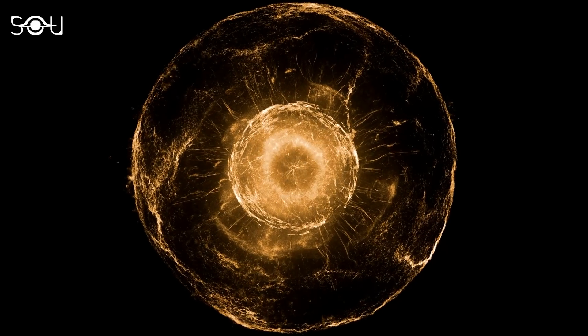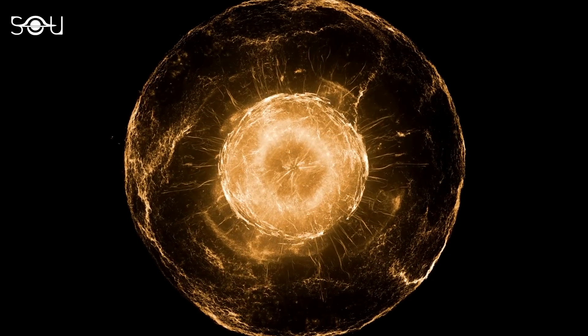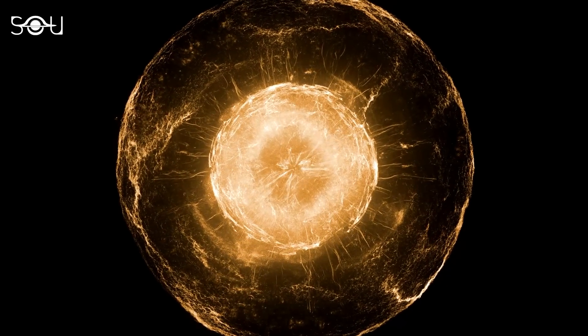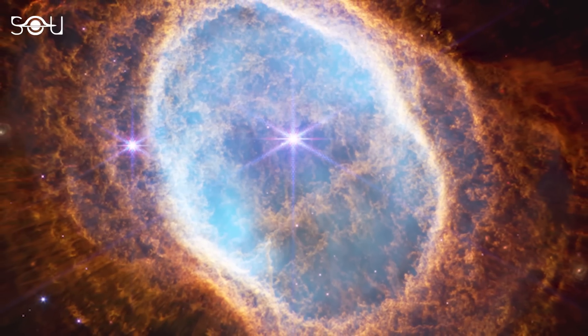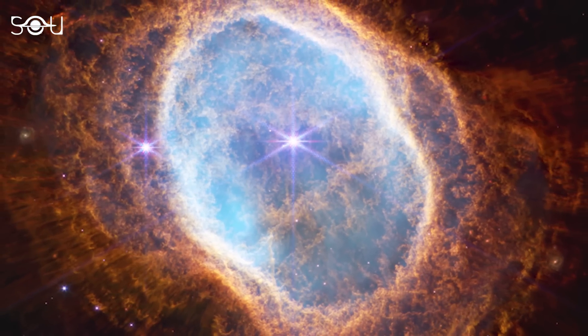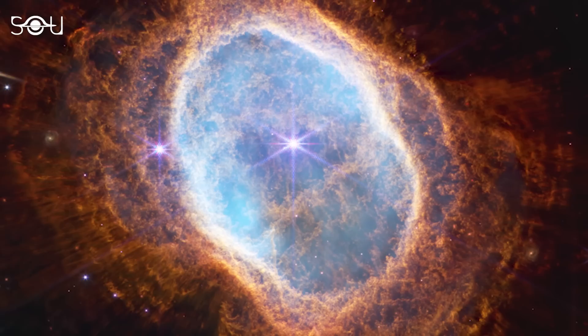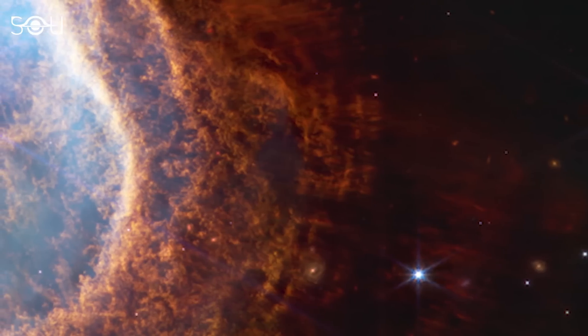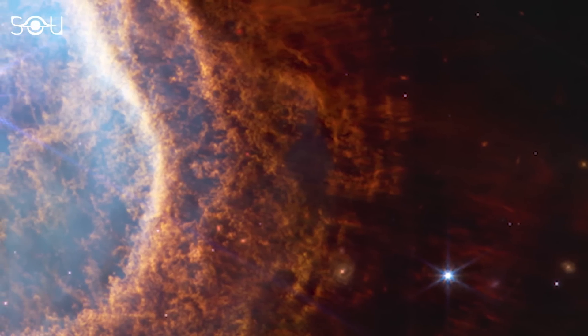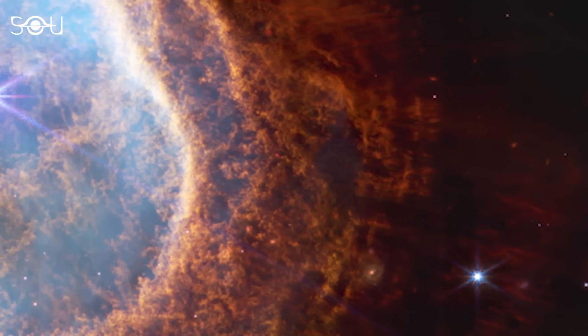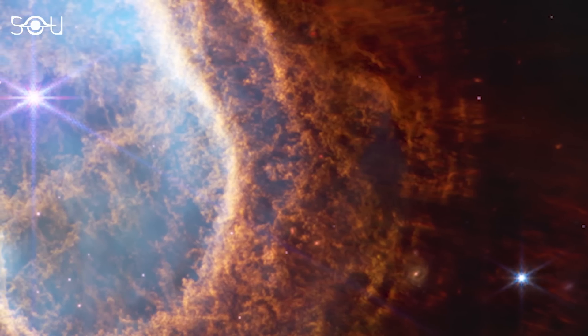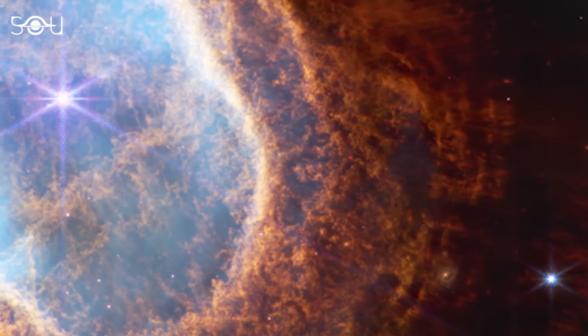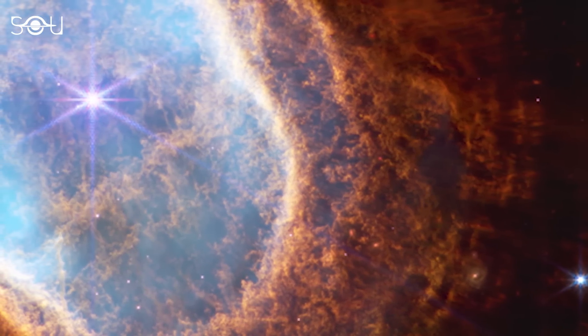A planetary nebula forms when a sun-like star ejects its outer layers at the end of its life. This near-infrared image captured by NIRCAM shows a very bubbly view of a nebula, with its structured shells also visible. The orange hue represents the newly formed molecular hydrogen during expansion. At the same time, the blue haze signifies the hot ionized gas heated by the core of the host star.